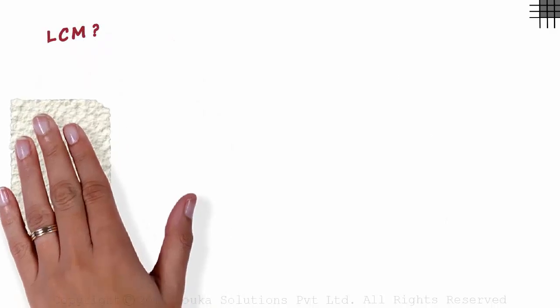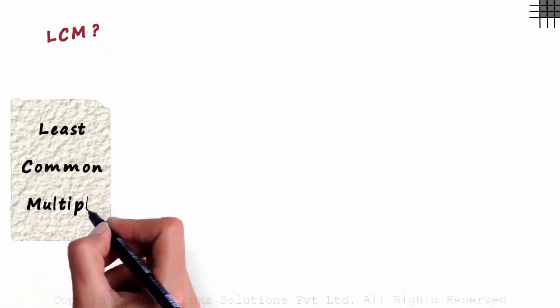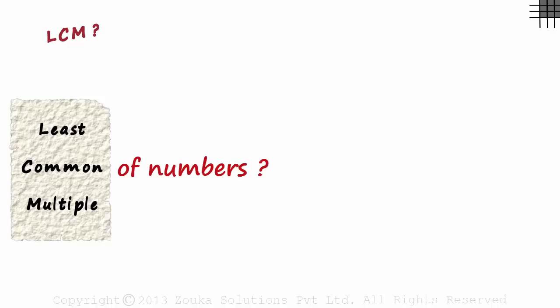What does LCM actually mean? It's simple. It's the least common multiple. But what is the least common multiple of numbers? Some of you may already know how we can find the least common multiple of numbers. But do we know what it actually means?